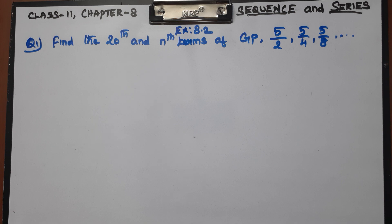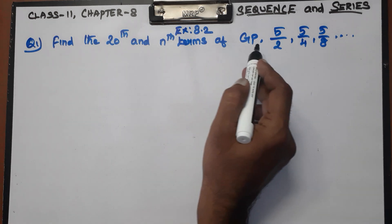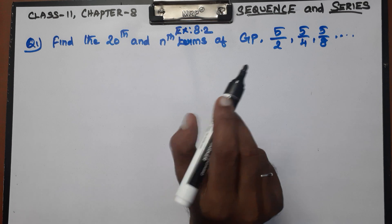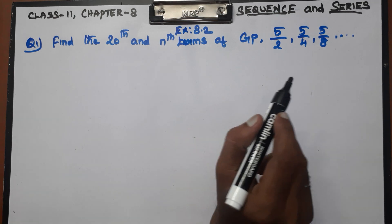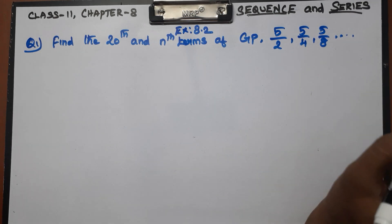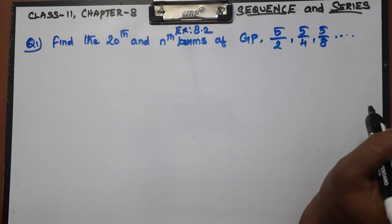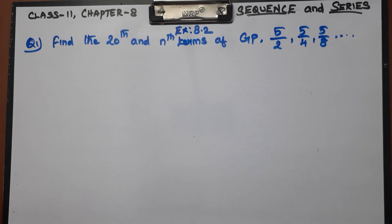In section 8.2, we will talk about the introduction part. What are we going to talk about in the book? So, question number 1: find the 20th and 8th terms of a GP. What is GP? Geometric Progression. It is a type of sequence. If this sequence makes a geometric progression, what do you write in the method? If you write in arithmetic progression, we write a common difference.